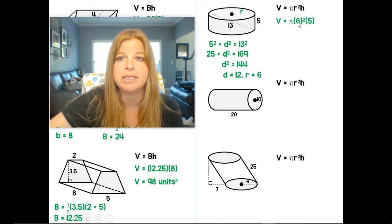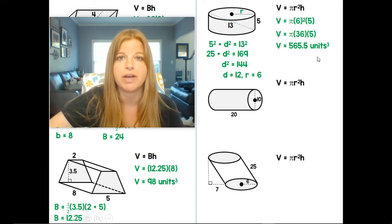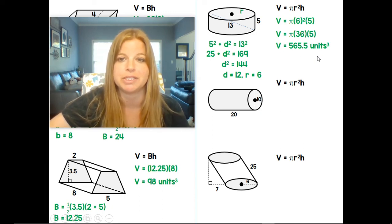So the volume of this cylinder would be pi times 6 squared times my height of 5. Calculator pretty much does all of the work for us at that point. And we get 565.5 units cubed.